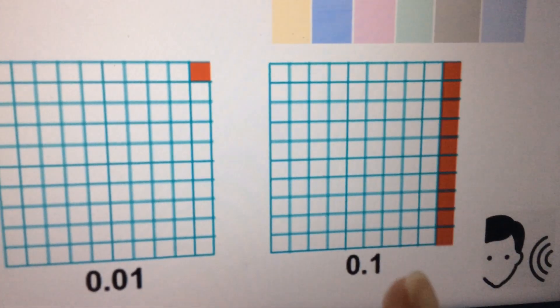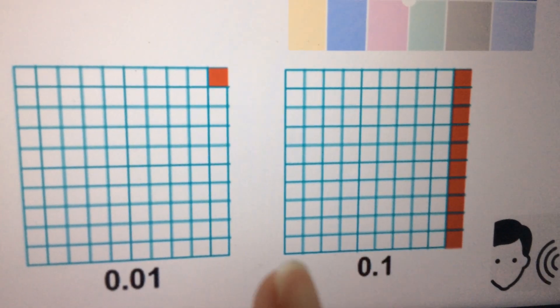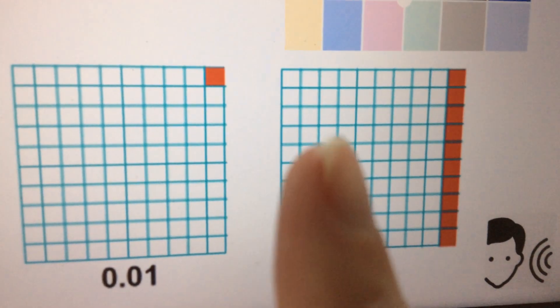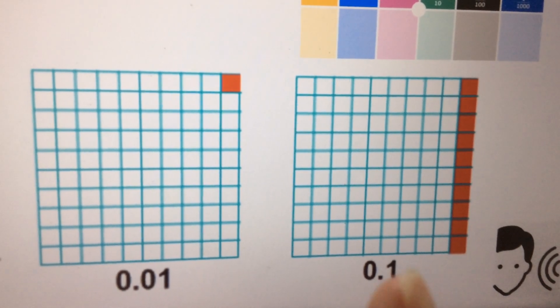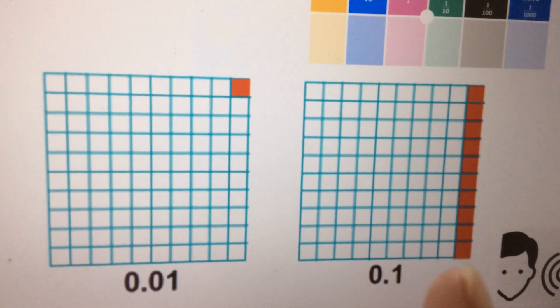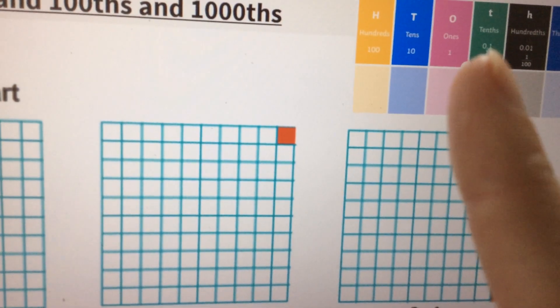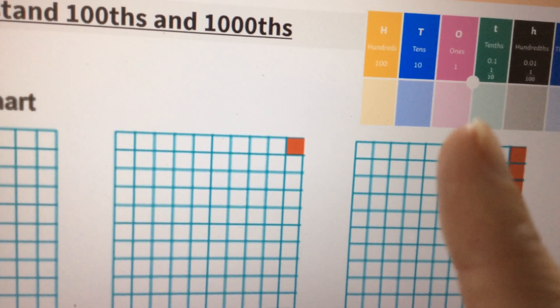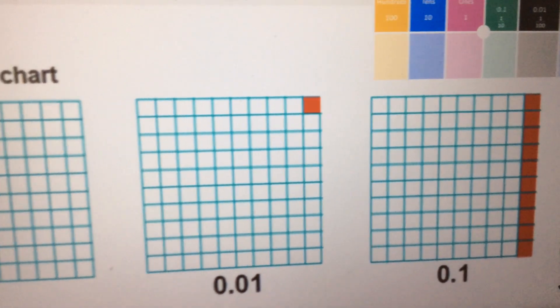Here we've got ten of those hundredths that have been coloured in. If we look at it another way it's been divided into ten columns and one column has been coloured in. So if we've got ten columns and one's coloured in, that's one tenth. And if we're not sure, one tenth would be that first column after the decimal point, so 0.1.